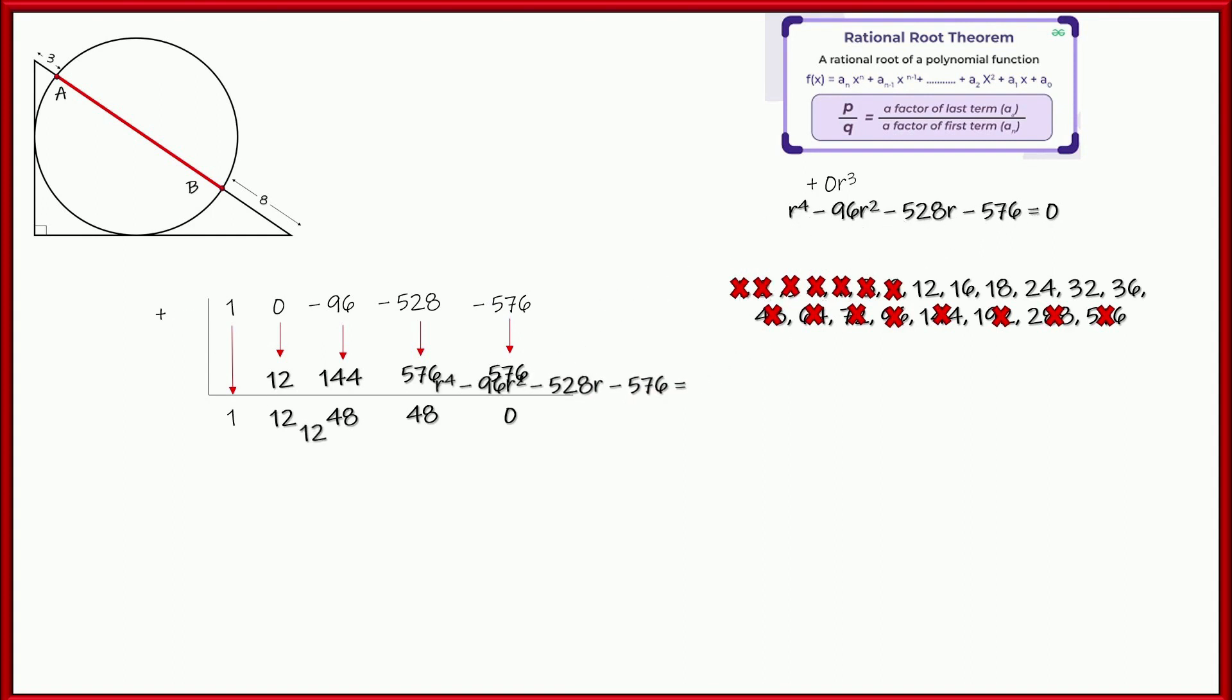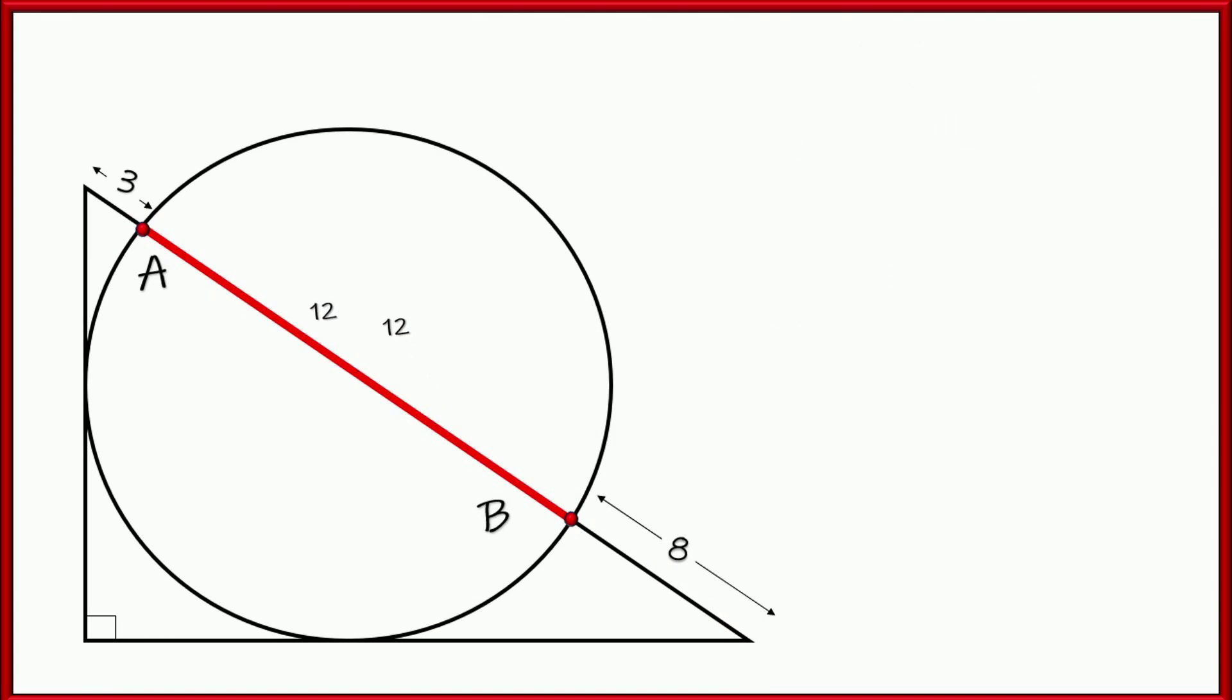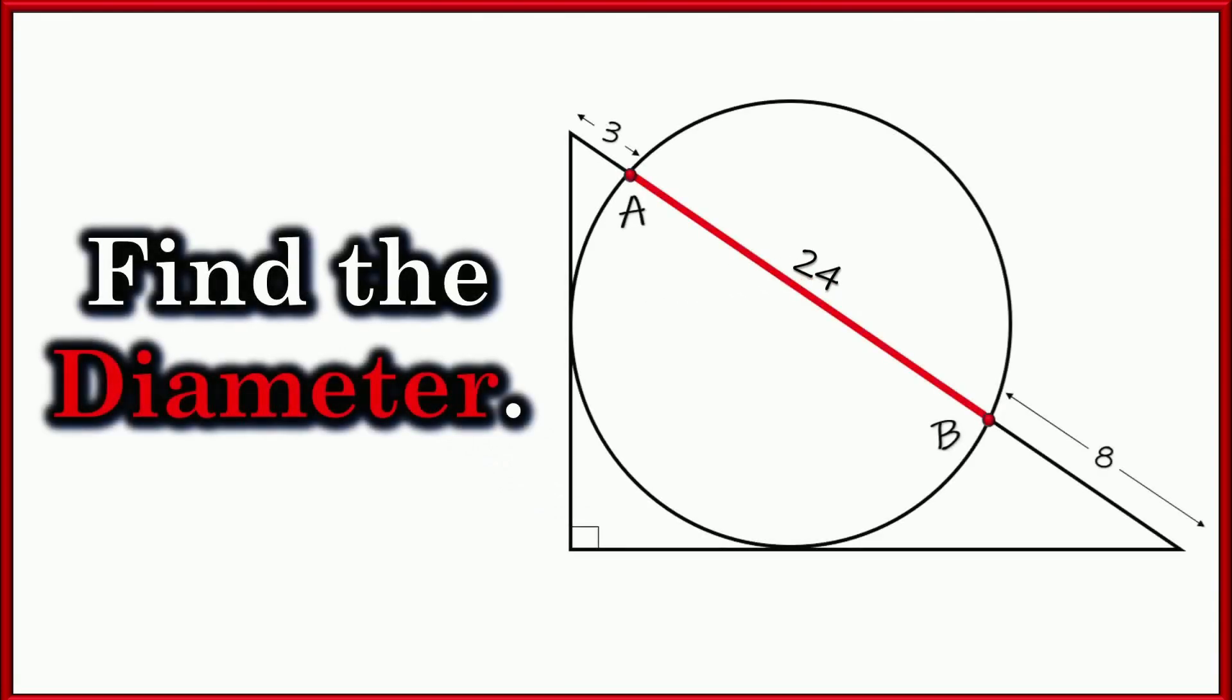So that means that r to the fourth minus 96r squared minus 528r minus 576 is equal to r minus 12 times r cubed, 12r squared, 48r, and 48. So just like this. So r cubed plus 12r squared plus 48r plus 48. Now, none of that really matters, except that this is the answer we were looking for, 12. So I know the radius is 12, and I'm looking for the diameter, so I just have to multiply by 2 or add it to itself. The diameter is 24.